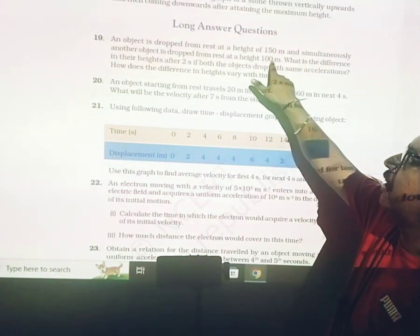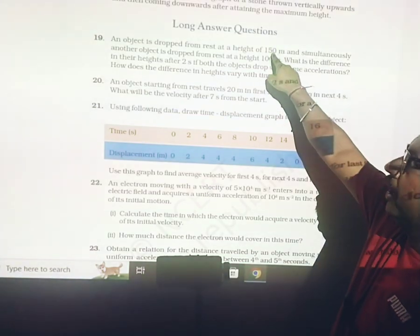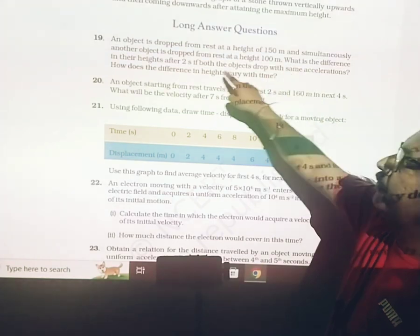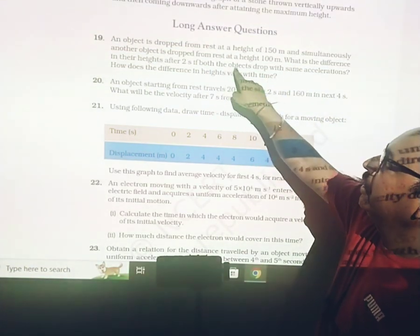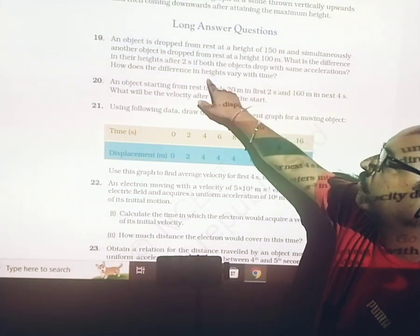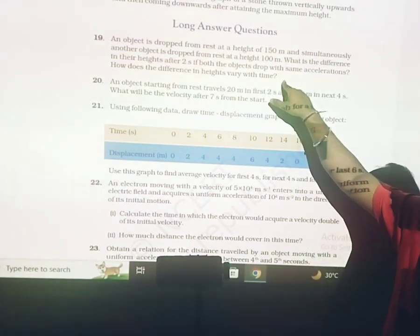Another object is dropped from rest at a height of 100 meters. What is the difference in the height after 2 seconds if both the objects drop with the same acceleration? How does the difference in height vary with time?